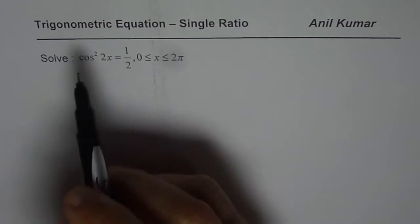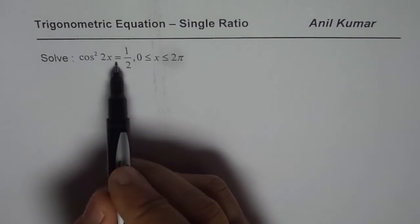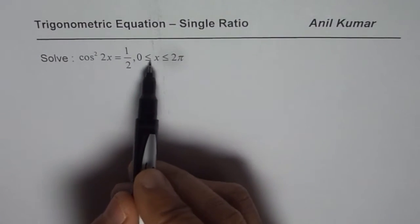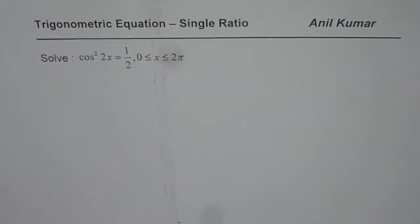This time the question here is cos²(2x) = 1/2, where x is between 0 to 2π. I request you to pause the video and answer this question. This is the kind of question you might just get in your test.